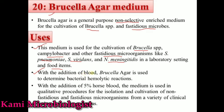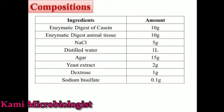When blood is added into this medium, it becomes a blood agar medium — Brucella is also referred to as a blood agar medium. With the addition of 5% horse blood, we can easily isolate both fastidious and non-fastidious microorganisms from clinical as well as non-clinical specimens.